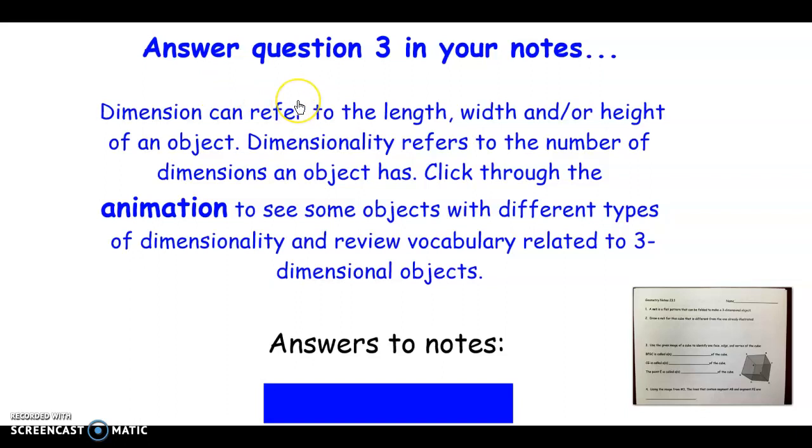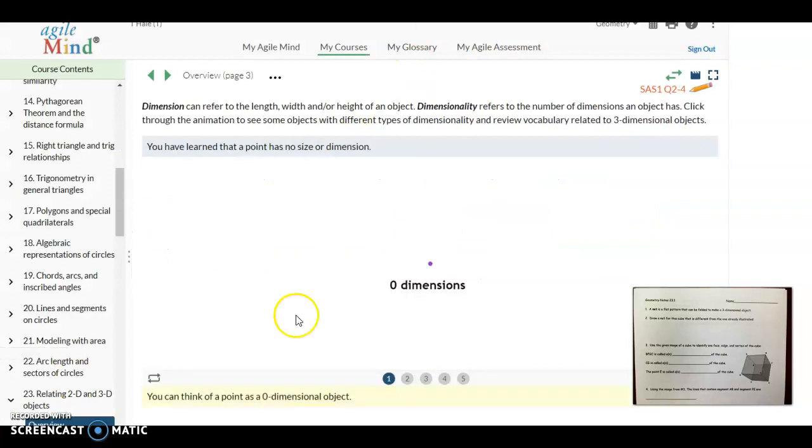So dimensions refer to the length, width, or height of an object. When we talk about dimensionality, we're referring to the number of dimensions an object has. So let's look at this animation to see some objects with different types of dimensionality and review some vocabulary that we have learned with three dimensional objects. So first of all, we can see here we just have a point. A point has no size and it has no dimension. So it would be what we would consider a zero dimensioned object. So it has no size, no shape, no dimension.